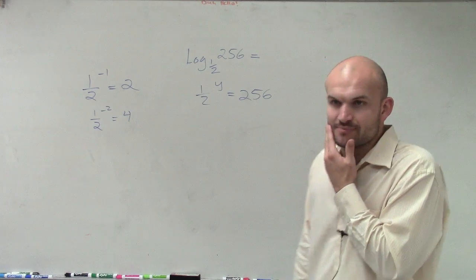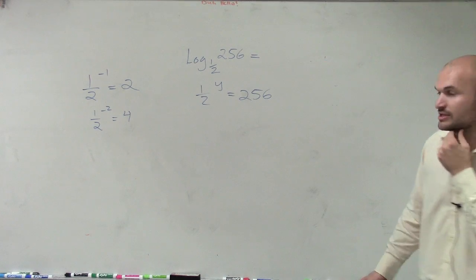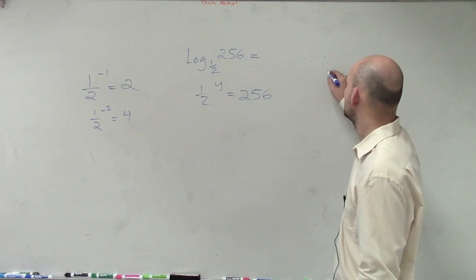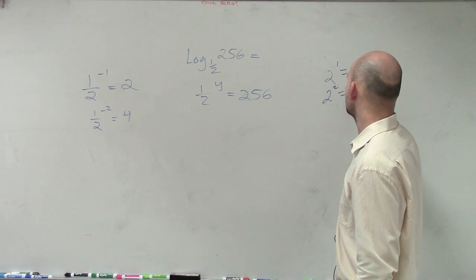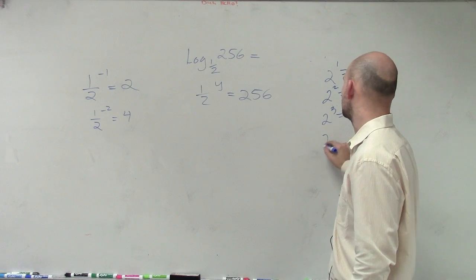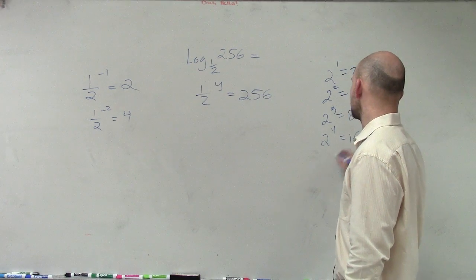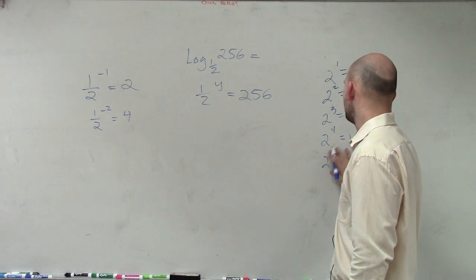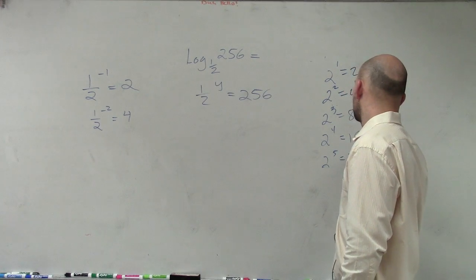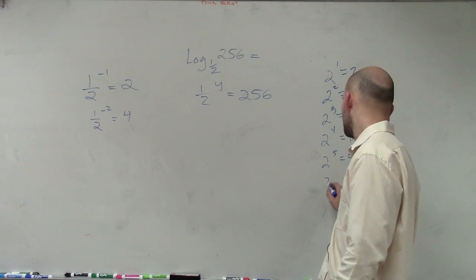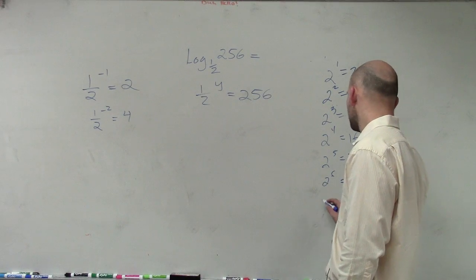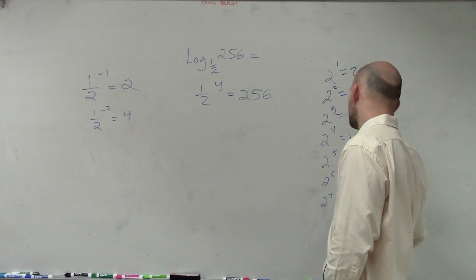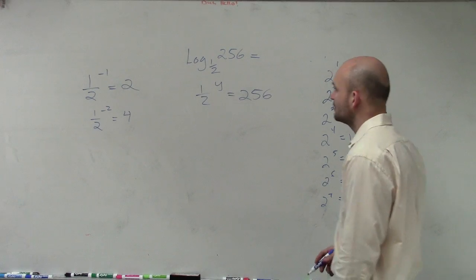But what is it going to have to be? How big do we have to get? So let's keep going: 2 to the first power equals 2, 2 squared equals 4, 2 cubed equals 8, 2 to the fourth equals 16, 2 to the fifth equals 32, 2 to the sixth equals 64, 2 to the seventh equals 128, and guess what?